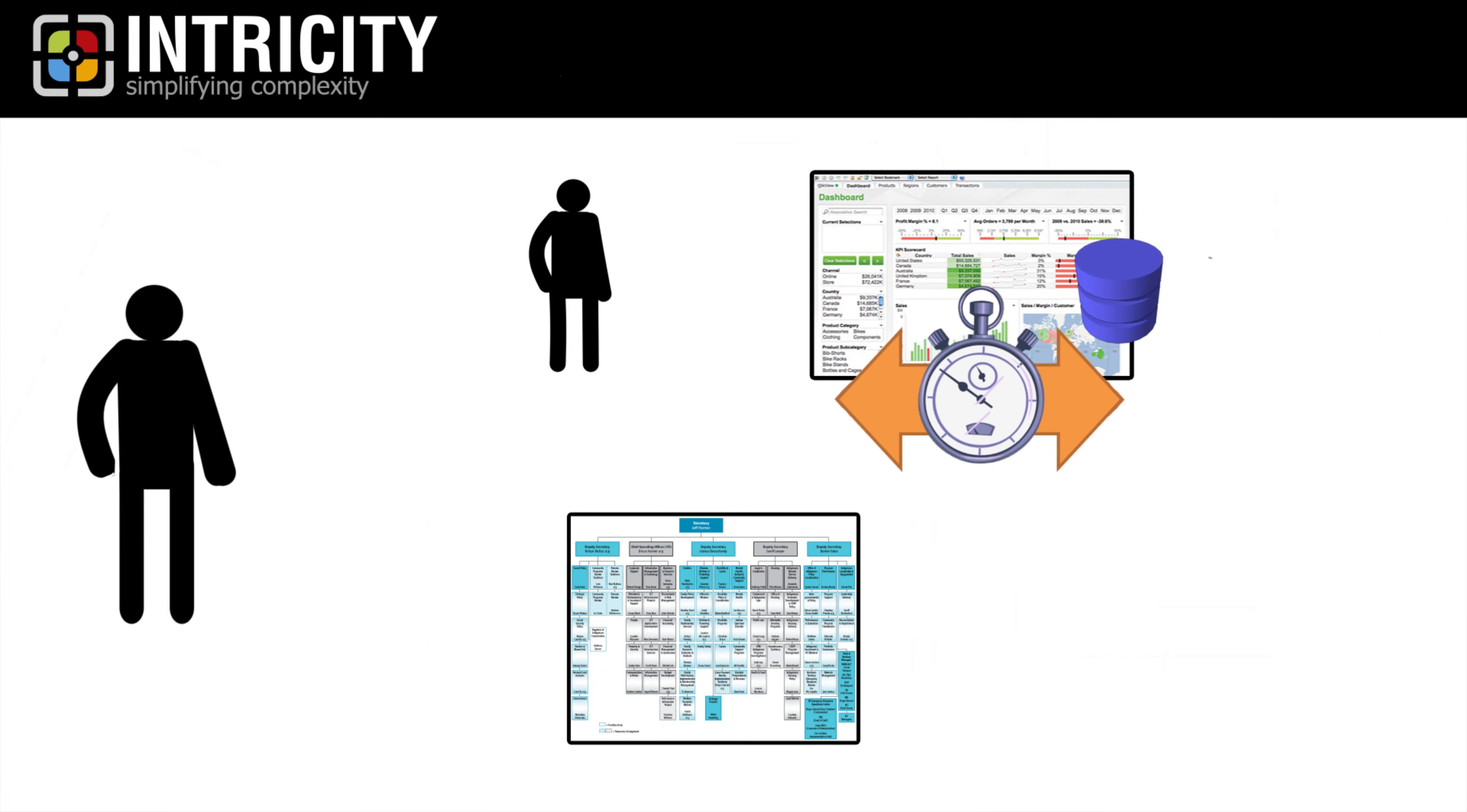This often meant that the users of these systems worked more like rogue data consumers rather than winning the good corporate citizen award. However, because they were able to produce answers for the executives, they soon became seen as heroes, which made the slow IT team kind of look bad.